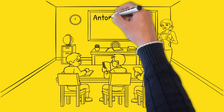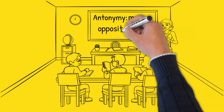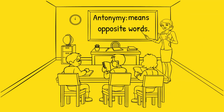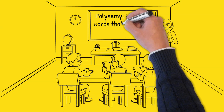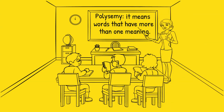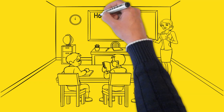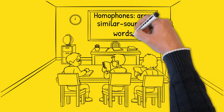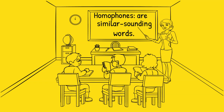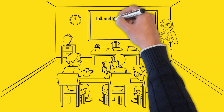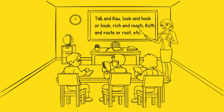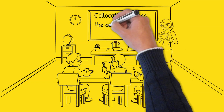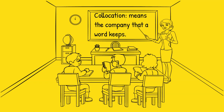D — antonym, means opposite words, that is, opposite in meaning. E — polysemy, from the word poly, means words that have more than one meaning. F — homophones, are similar sounding words, that is, words that sound similar. For example, tall and raw, look and hook or book, reach and reach, roots and roots or roots, and so on. G — collocation, means the company that a word keeps.